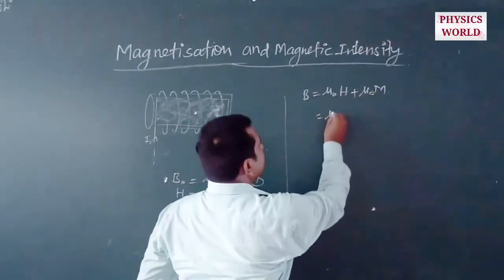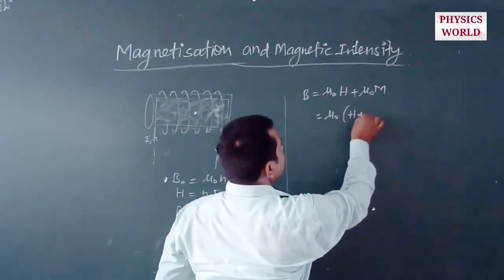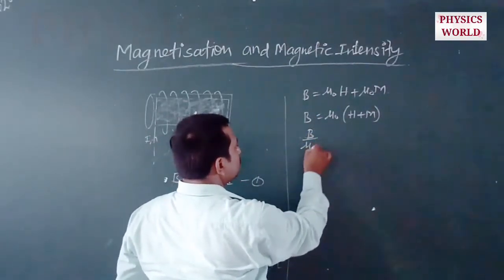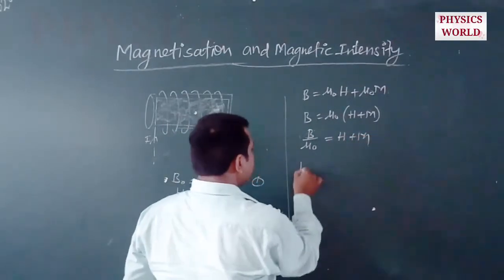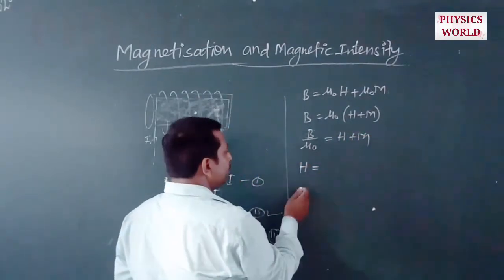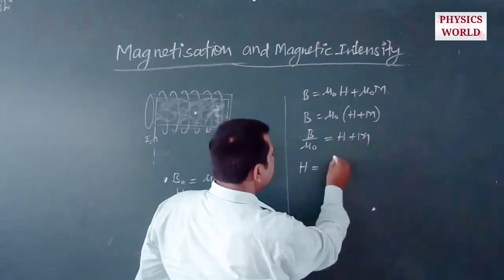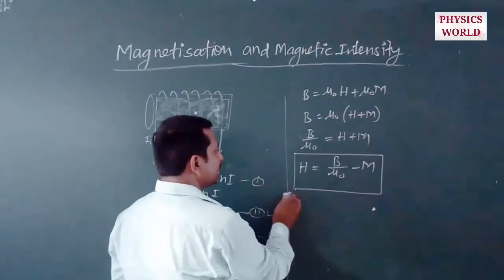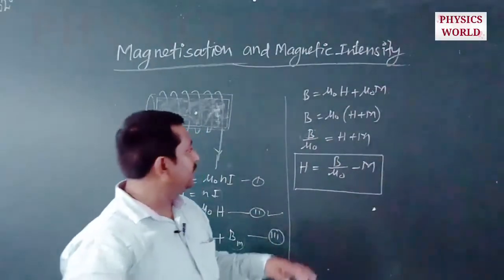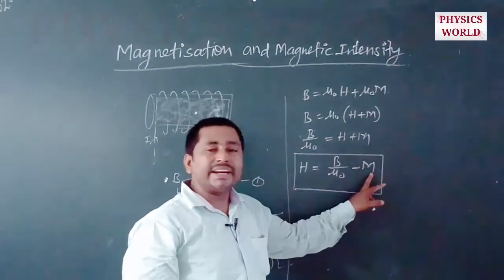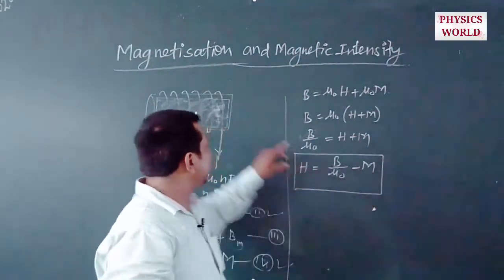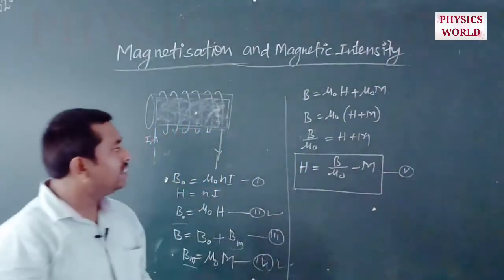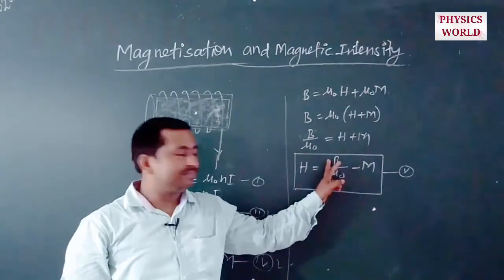Taking μ₀ common from both terms gives B = μ₀(H + M). From this we get B/μ₀ = H + M, and rearranging we also get H = B/μ₀ − M. This is the formula for magnetic intensity in terms of the total magnetic field at any point inside the solenoid and the magnetization produced inside the magnetic substance.